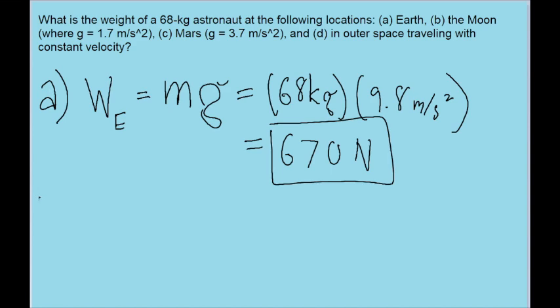And we'll just repeat this process for the next few parts. So the weight on the Moon is going to be the same mg formula, except for g, we're going to use the g value the problem gives us, the 1.7 meters per second squared, since that's what g on the Moon is. So we put that into our calculator, and then we find a weight of 120 Newtons.